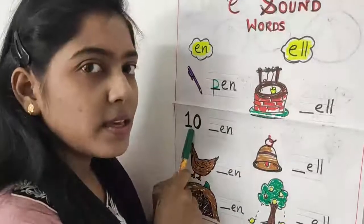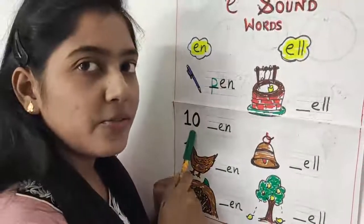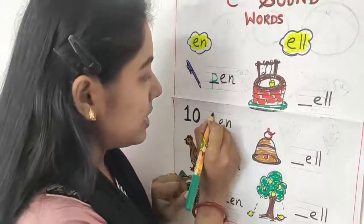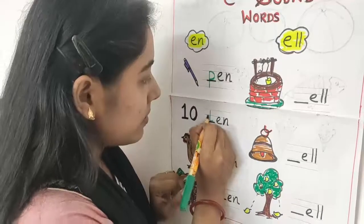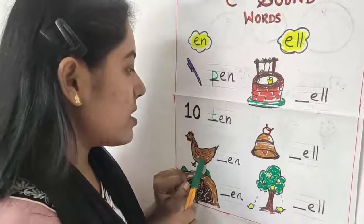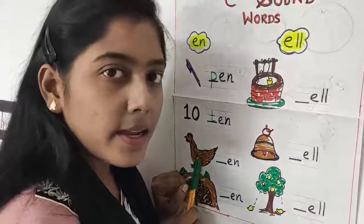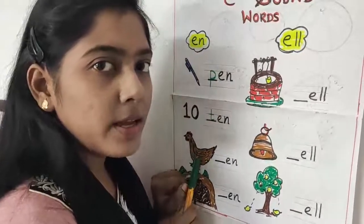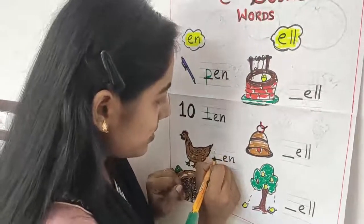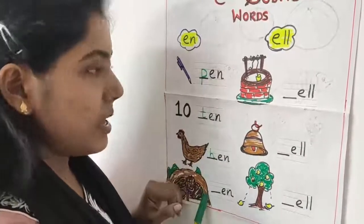What is this? This is a number, 10. So T for ten. I will write here T. Now see the next picture. What is this? This is a hen. Which letter for hen? H for hen. Everyone say H, E, N — hen.